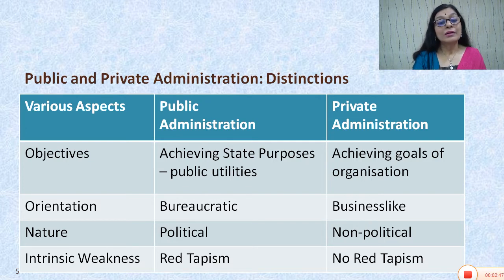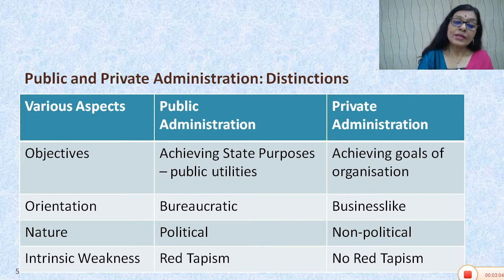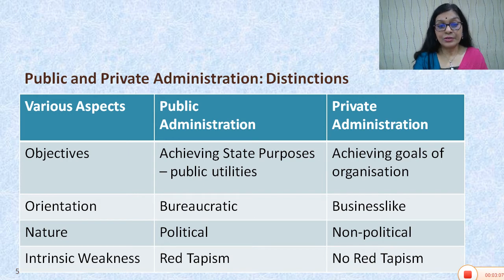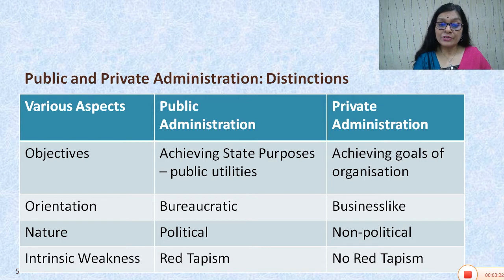What is bureaucracy? Bureaucracy is an organizational model which is found in government. In fact, government departments are organized on the basis of bureaucracy. Bureaucracy is a hierarchical structure where there are superior-subordinate relationships. There is very strict division of authority and corresponding responsibility. There is strict adherence to rules and regulations, so the system is rigid, whereas in private administration it is more flexible.